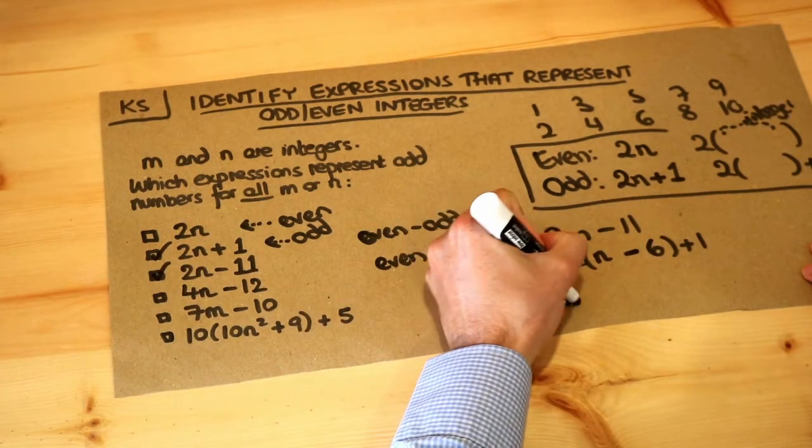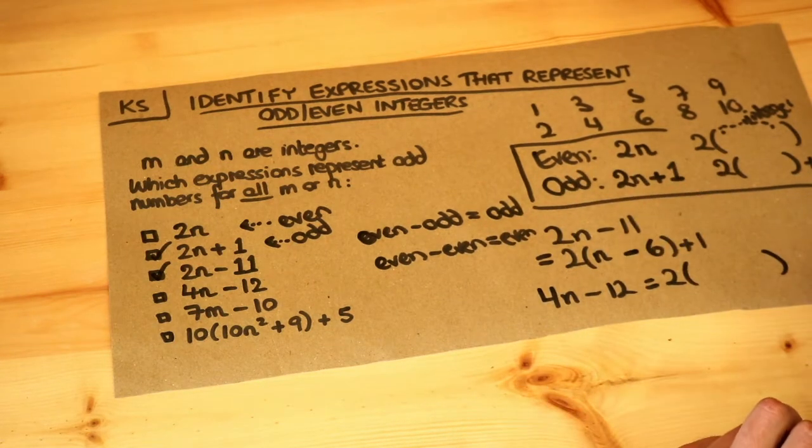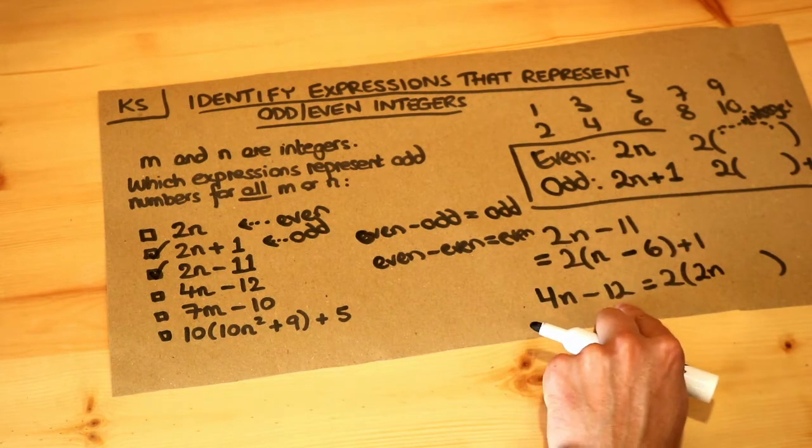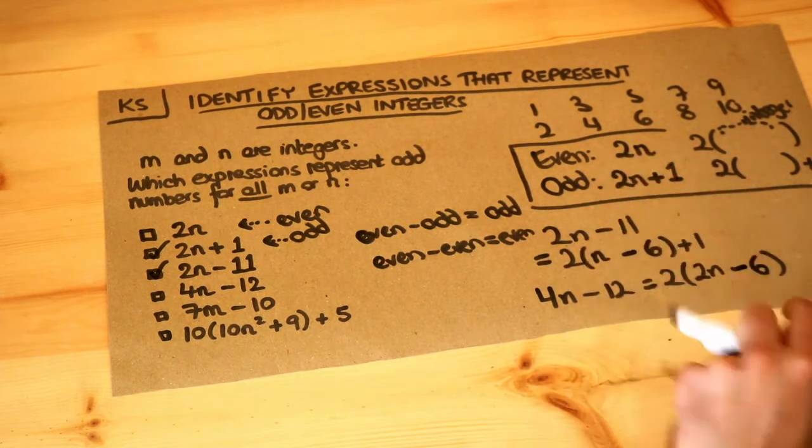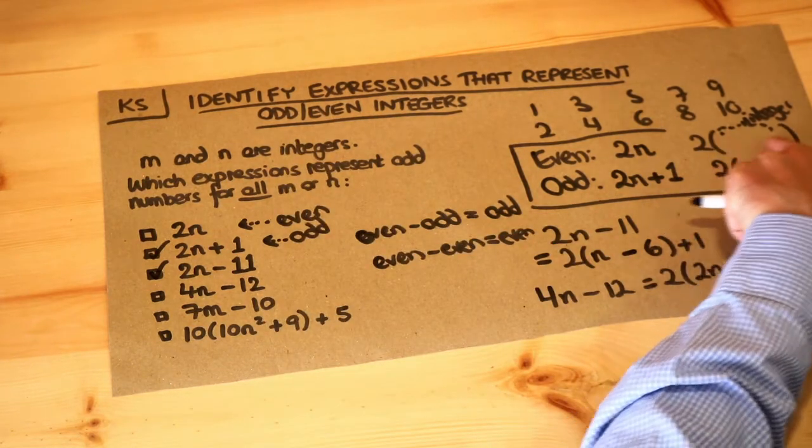So 4n minus 12, we just need to write in the form 2 times something to guarantee it's even. Well, 2 times what is 4n? It's 2n. And 2 times what is minus 12? It's minus 6. And because that's 2 times an integer, it's guaranteed to be even.